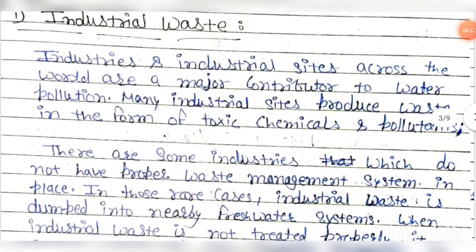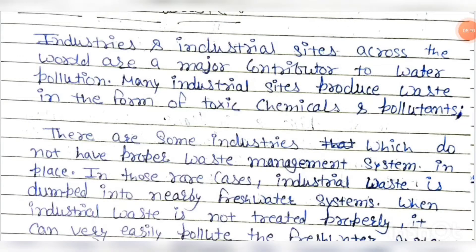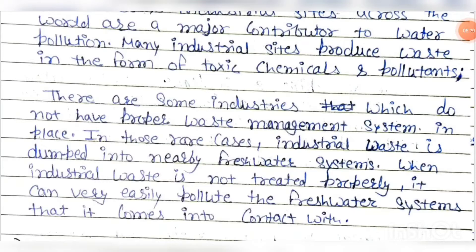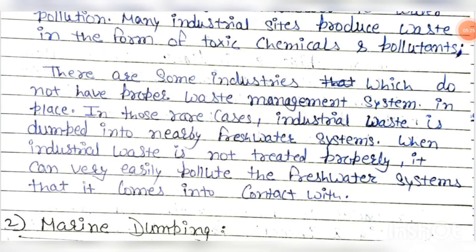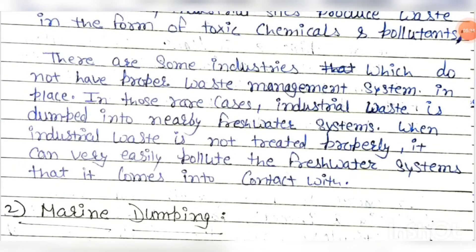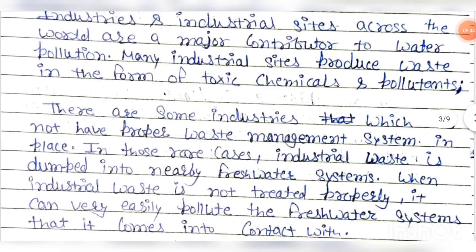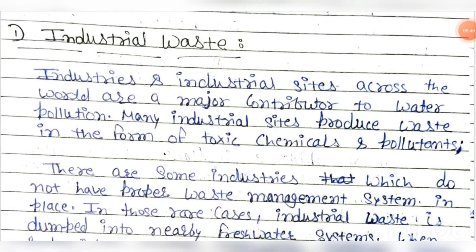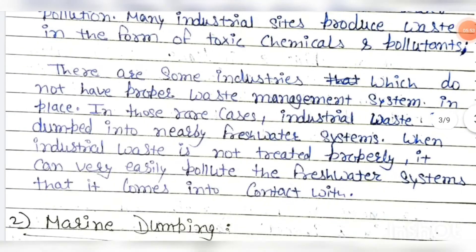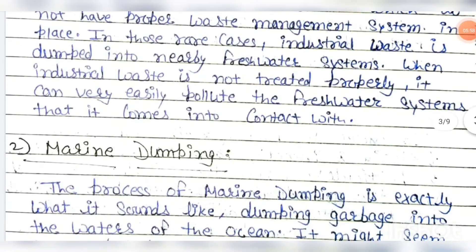The first cause of water pollution is industrial waste. Industries and industrial sites across the world are a major contributor to water pollution. Many industrial sites produce waste in the form of toxic chemicals and pollutants. There are some industries which do not have a proper waste management system in place; in those cases, industrial waste is dumped into nearby fresh water systems. When industrial waste is not treated properly, it can very easily pollute the fresh water system it comes into contact with.